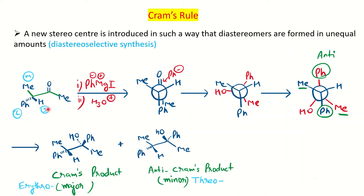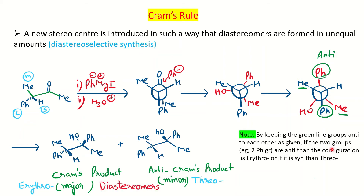The key point to keep in mind is to always maintain the stereochemistry — in this case the green line groups (Me) are anti to each other, so you maintain the same in the Newman projection and then find out the stereochemistry of the two groups. I have written the same statement here — you can note it down for further problems based on this.